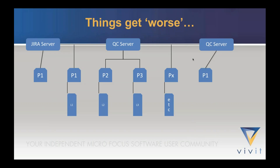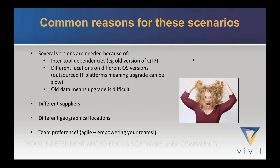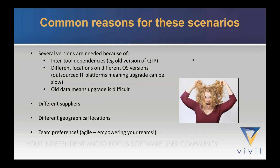Then things got worse. Originally we had one instance, but then they outsourced to a different company that was using JIRA. We also found we were running several instances of QC on different versions — for example, one instance had to run an old version of Quality Center to align with a team using a specific version of QTP that wouldn't run with a newer ALM. With a different customer, they were still using Windows 98, and we couldn't upgrade the clients.